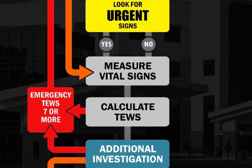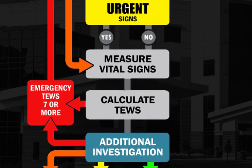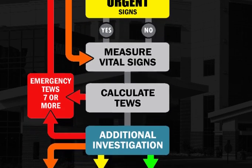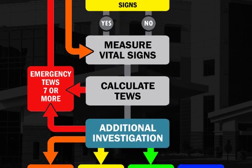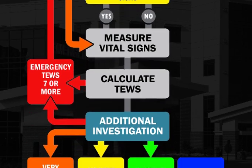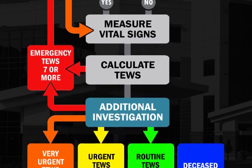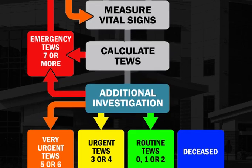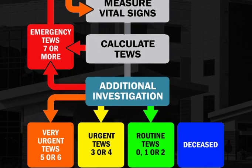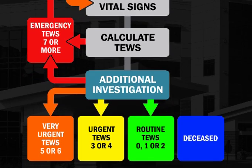A TEWS of less than seven would take us to the last step to check for additional investigations. We would now be able to allocate the patient into their appropriate priority level, based on whichever clinical sign, TEWS, or additional investigation points to the higher priority level.